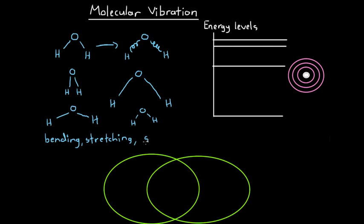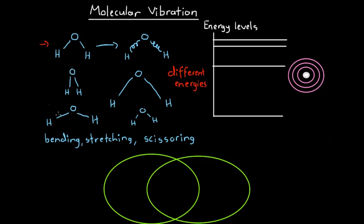Another vibrational mode is scissoring. Each of these different vibrational modes of the water molecule carries a different energy. This is our regular ground state water molecule. The four different sketches show the water molecule in an excited state. Because the molecule is vibrating — bending, stretching, or scissoring — it's excited and has gained energy. Each of these different sketches occupies a different vibrational energy level.